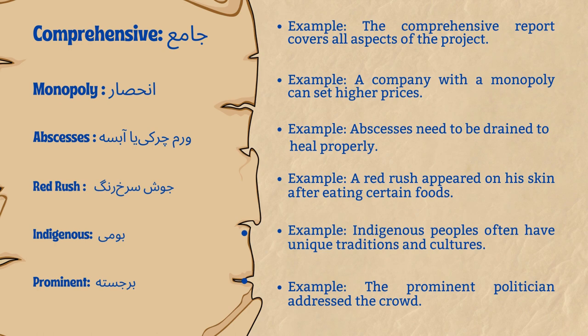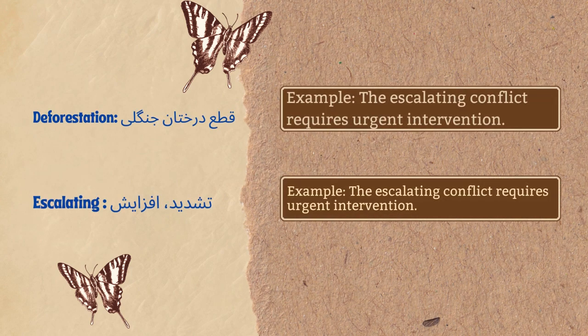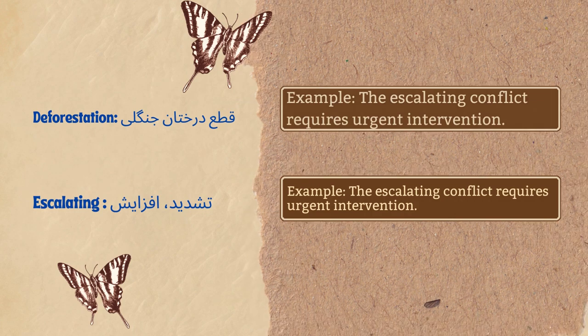Indigenous. Example: indigenous peoples often have unique traditions and cultures. Prominent. Example: the prominent politician addressed the crowd. Deforestation. Example: deforestation leads to loss of biodiversity. Escalating. Example: the escalating conflict requires urgent intervention.